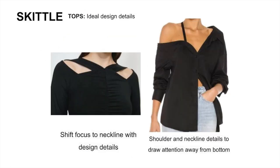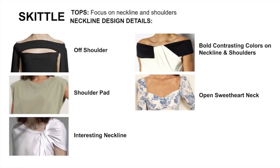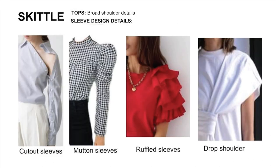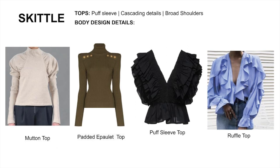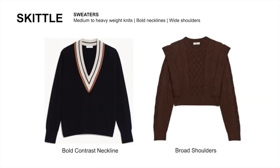For the skittle's tops, shift the focus with open necklines and broaden the shoulder line. Here are some examples of necklines to draw attention to the neck and shoulders. On the sleeves, play up the shoulders. Here are some examples of what to look out for in tops. For sweaters, go with medium to heavy weight knit and draw attention to the neckline and shoulders.